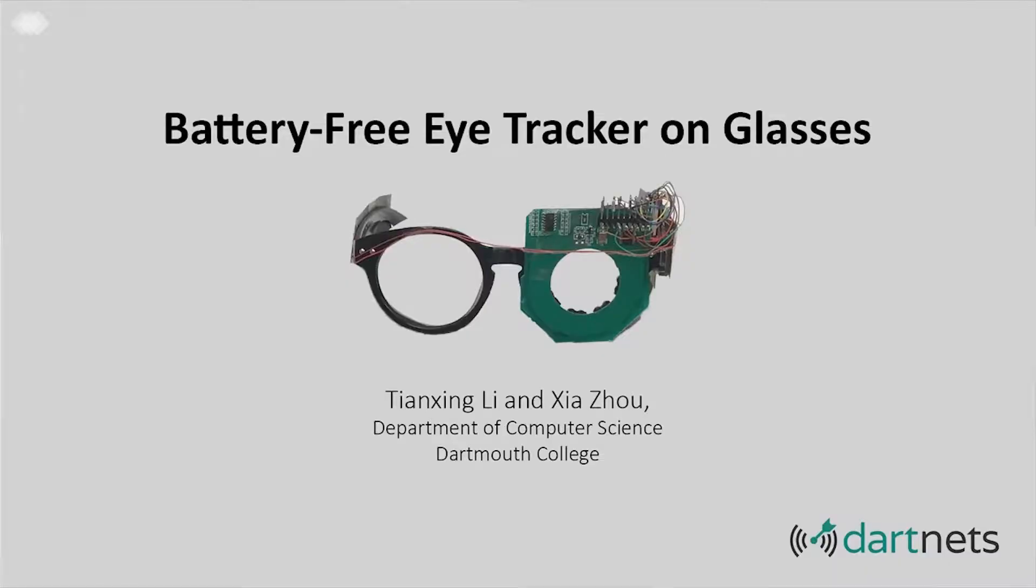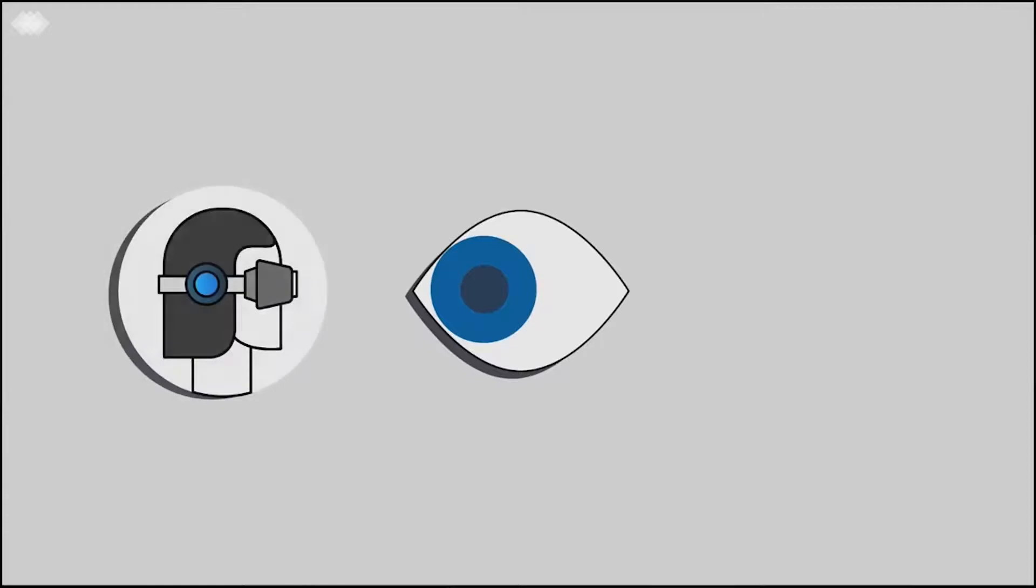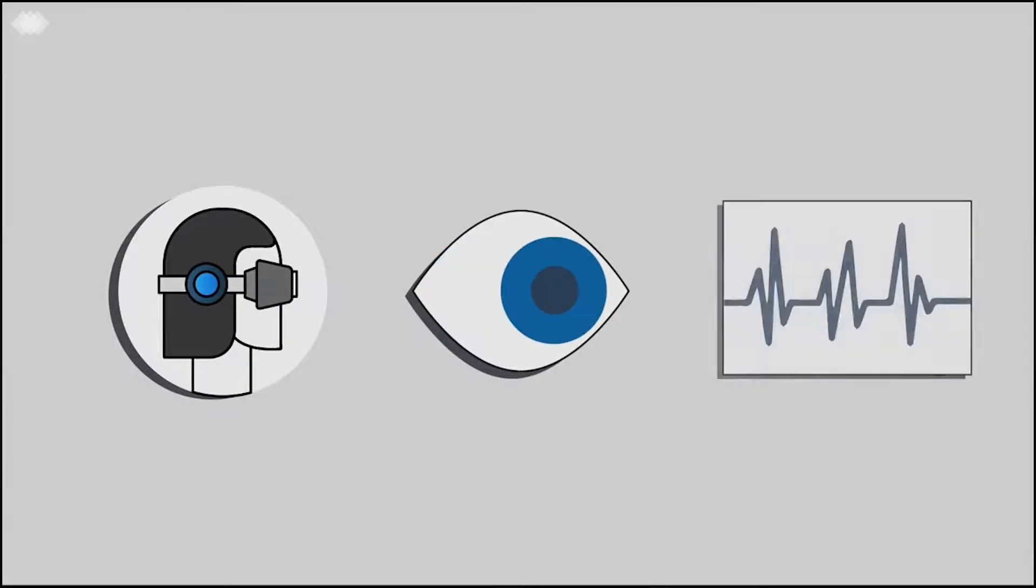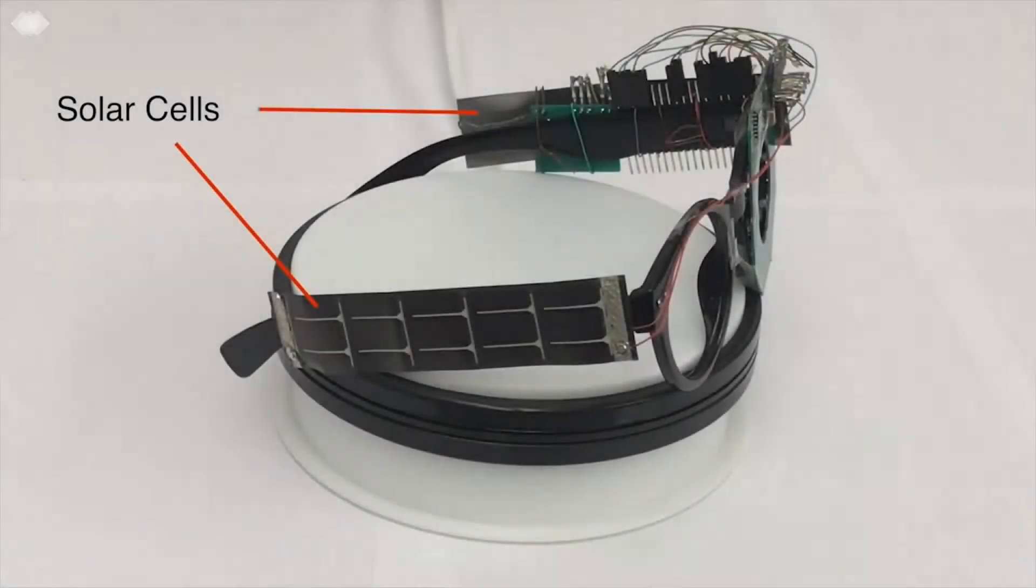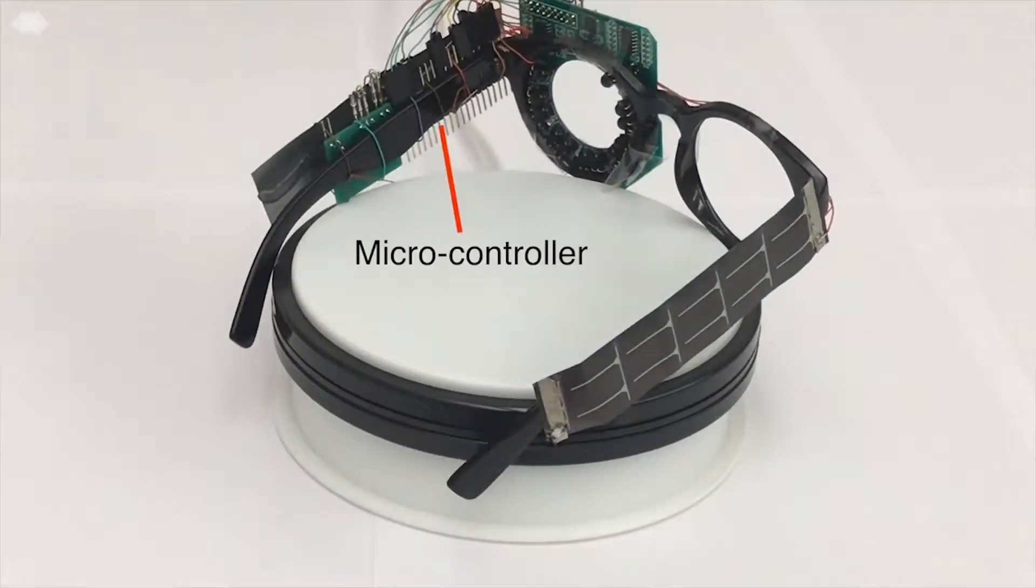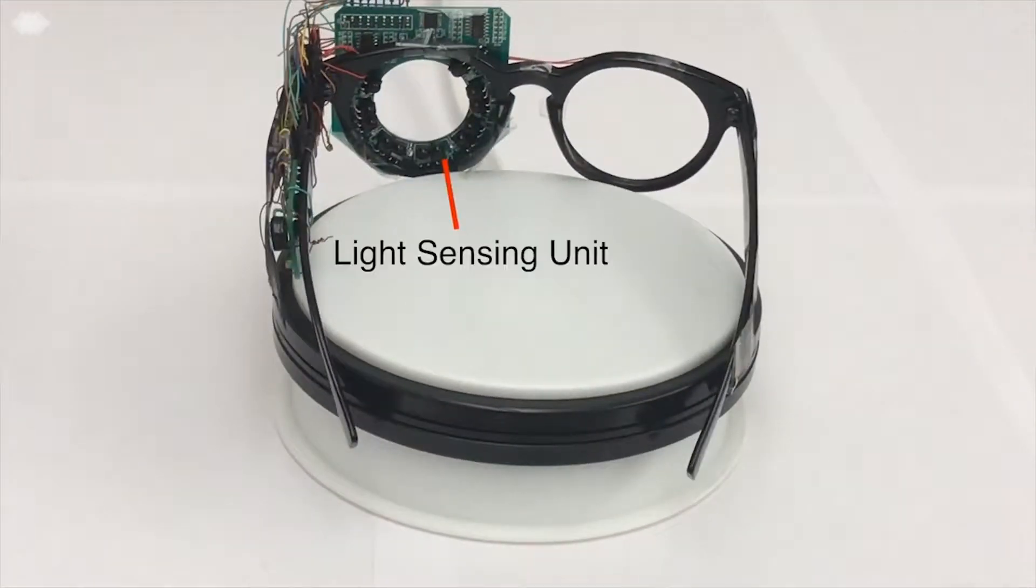The solar-powered glasses include a microcontroller and a light-sensing unit that uses near-infrared lights and photodiodes to see how your eye reflects light. The glasses infer pupil size and position to track rapid eye movements.